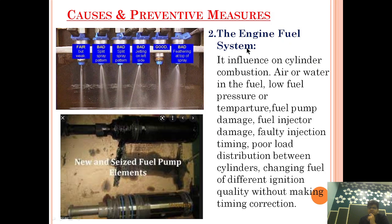The second group is the engine fuel system and its influence on cylinder combustion. Causes include: air or water in the fuel, low fuel pressure or temperature, fuel pump damage, fuel injector damage, faulty injection timing, poor load distribution between cylinders, and changing fuel of different ignition quality without making timing correction.